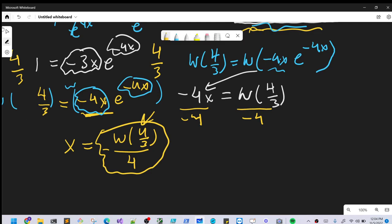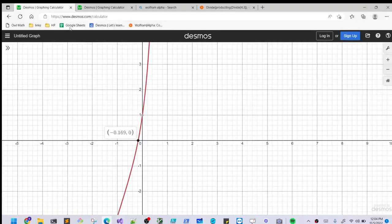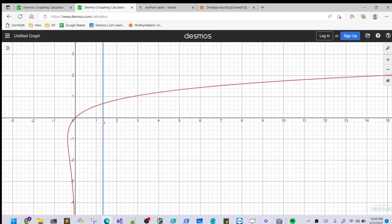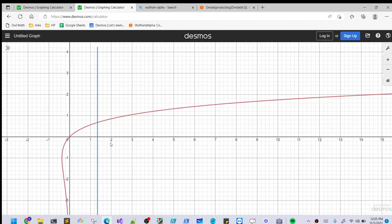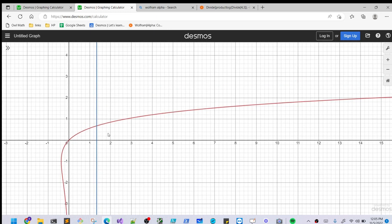And what we can do is take a look at the graph of the Lambert W function. And I have that right here. So we have this line here is actually at 4 thirds. So we can look at when does it intersect. And for any positive number, you see that there's only going to be one point of intersection. So this will tell us that there's going to be only one real solution from the Lambert W function.